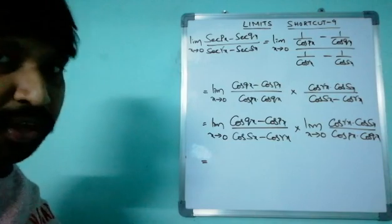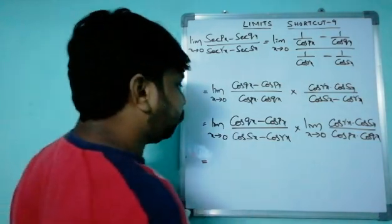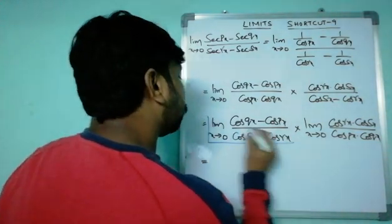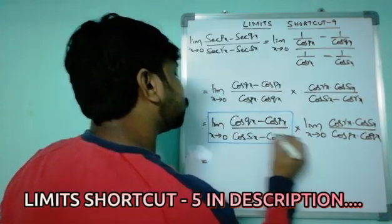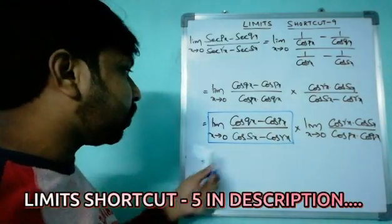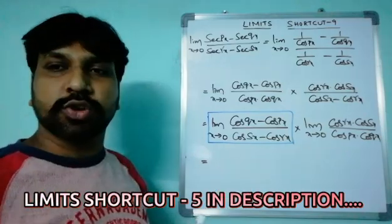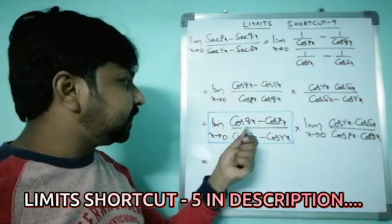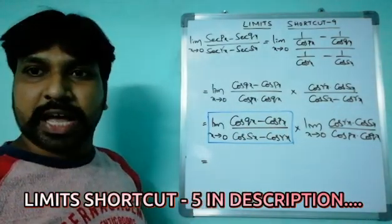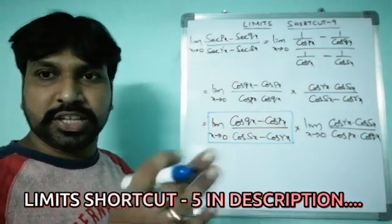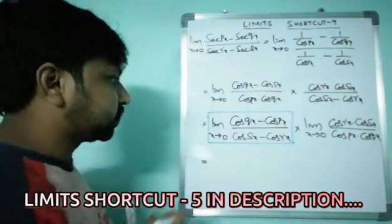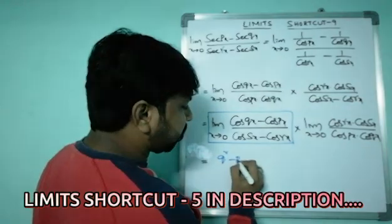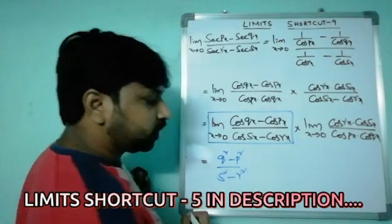Now if you see, that is a formula we discussed in shortcut number 5. The formula is limit x tends to zero cos qx minus cos px by cos sx minus cos rx is equal to q square minus p square by s square minus r square. If you have any doubt just look at the description, I'm keeping it in the description box.